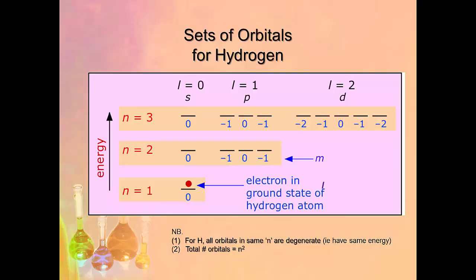This diagram shows the sets of orbitals for hydrogen. For hydrogen only, all orbitals in the same principal quantum number n are degenerate — they have the same energy. You can see n=1, n=2, n=3 increasing in energy, giving us the 1s, 2s, 2p, 3s, 3p, and 3d orbitals. The 2p subshell has three orbitals, the 3p subshell has three orbitals, the 3d has five, and so on — and this information is given to you in the exam so you always know how many boxes to draw.